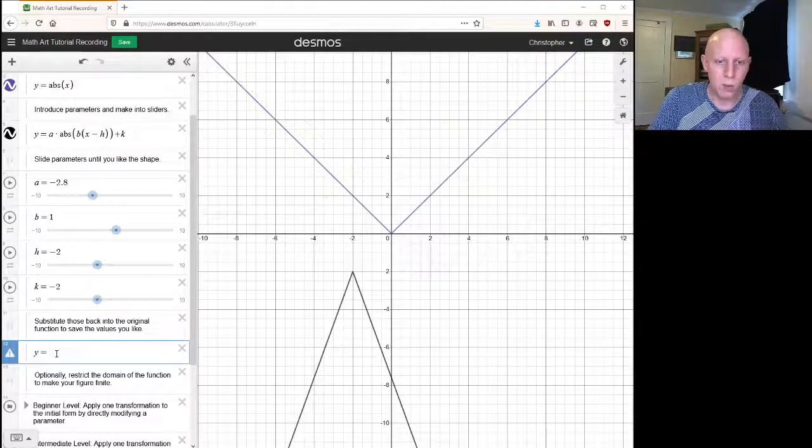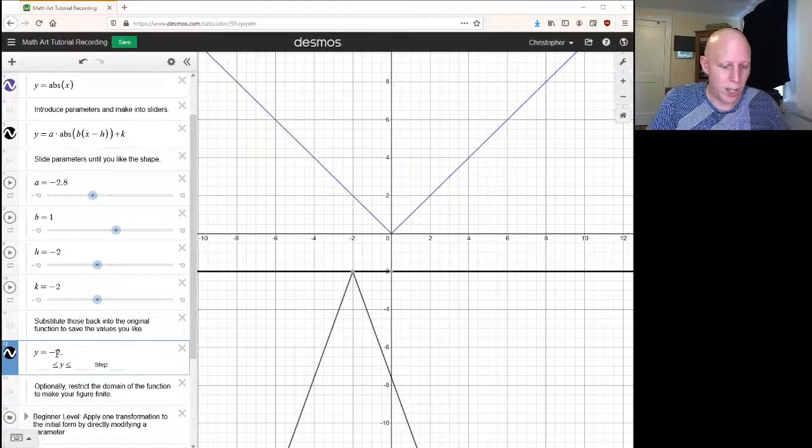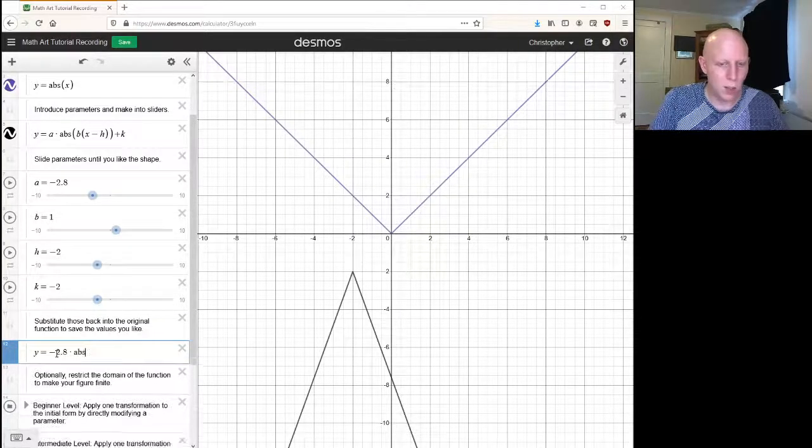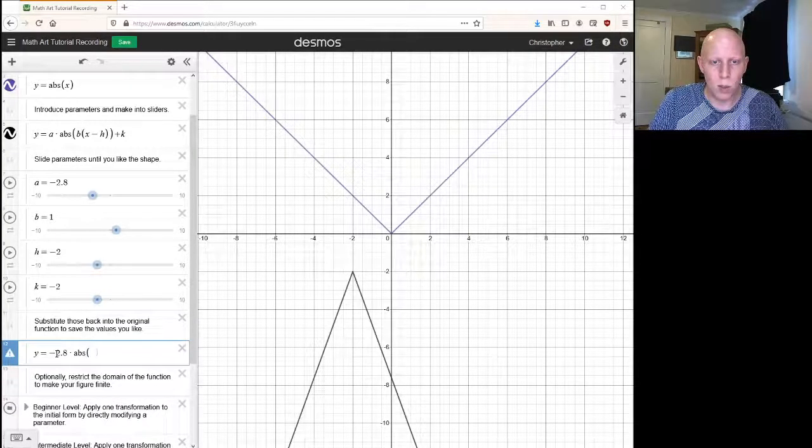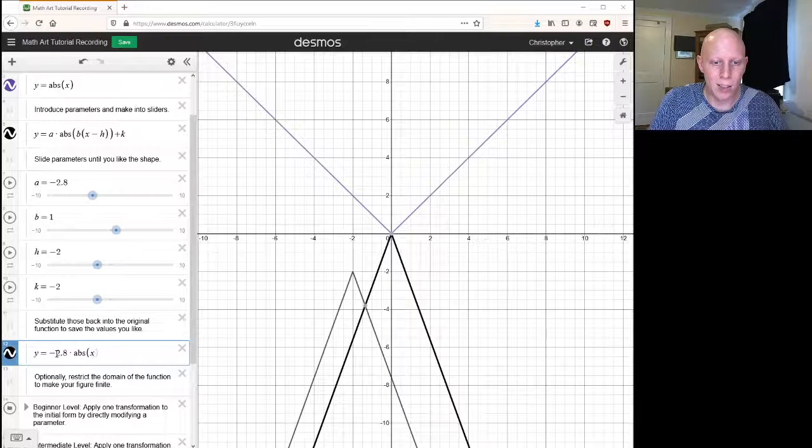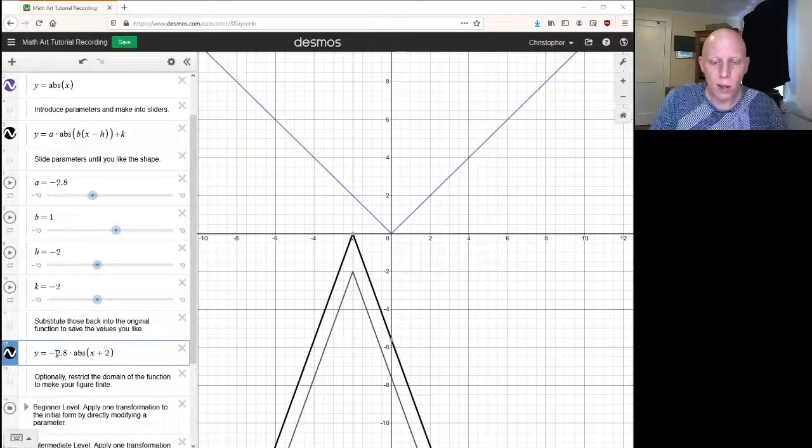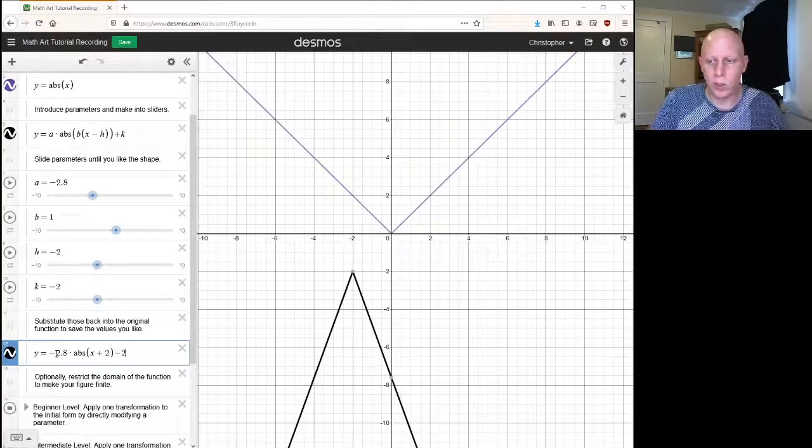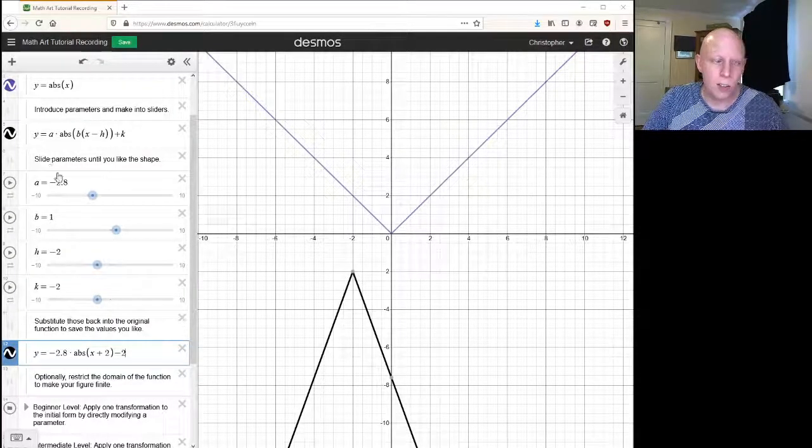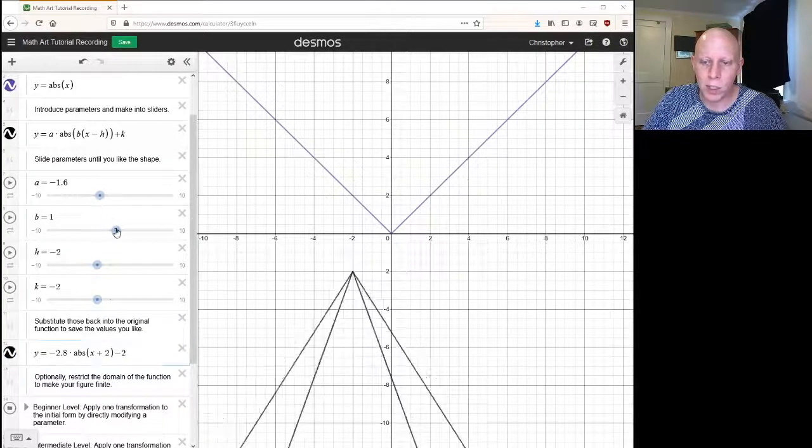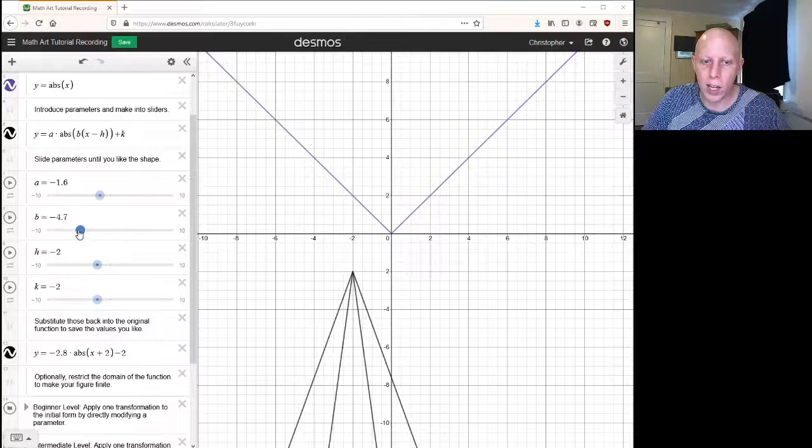So we're going to write y equals negative 2.8 times the absolute value—b is 1, so we can just write x plus 2—and then minus 2. That's our function, that's going to be this piece. Now even if we change these parameters, we've saved what we like.